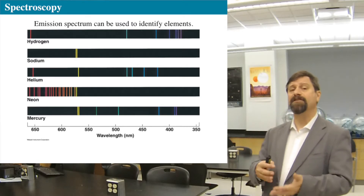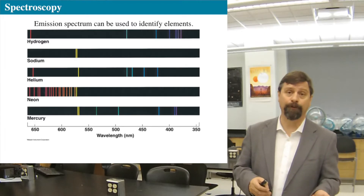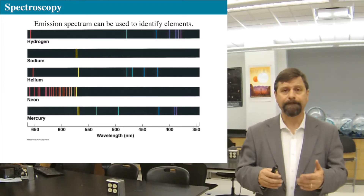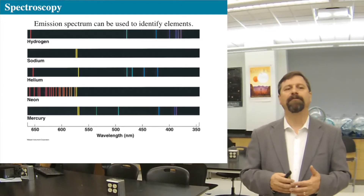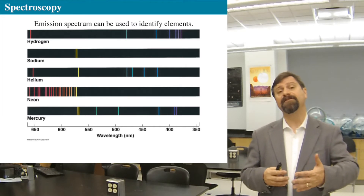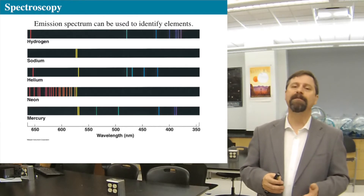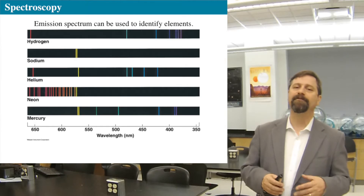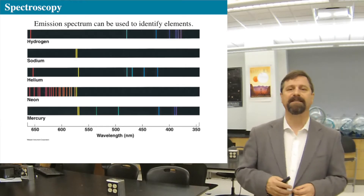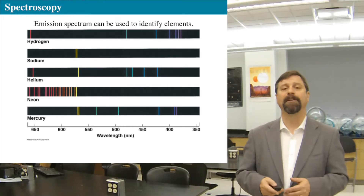You'll get a sodium spectrum and, since it's table salt, a chlorine spectrum as well. But a noble gas such as neon will have a different spectrum, mercury vapor has a different spectrum, and ubiquitous hydrogen throughout the cosmos has its own specific spectrum.